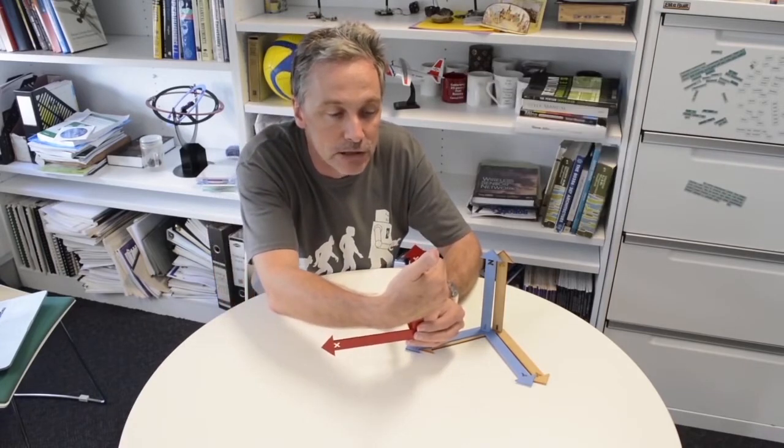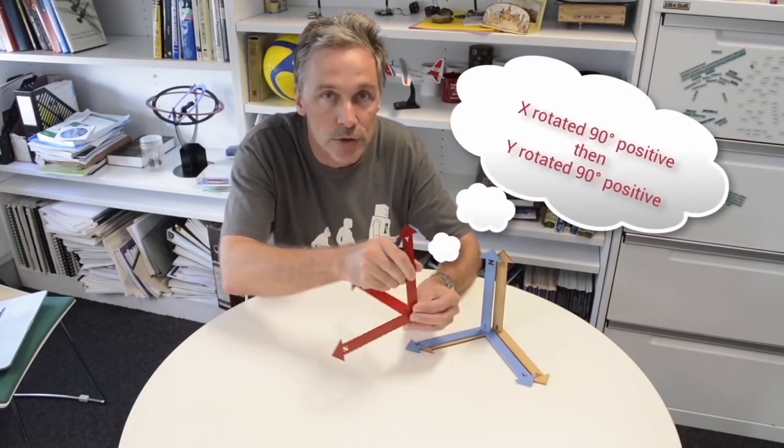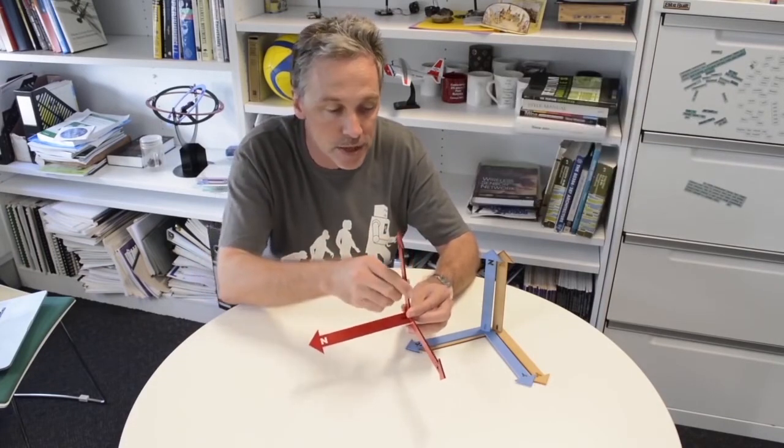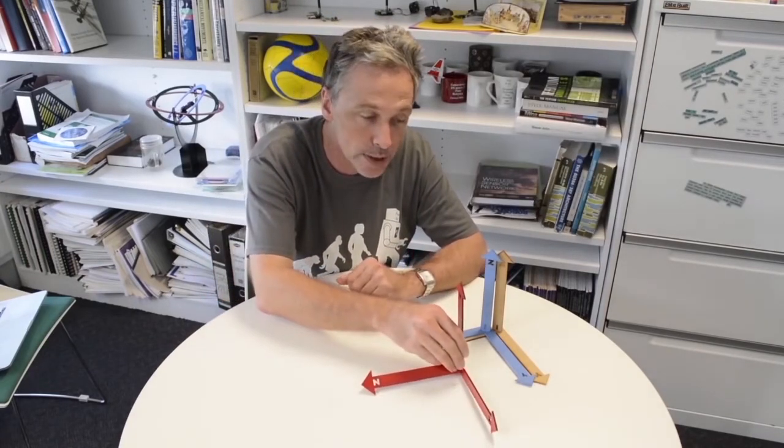And now, I'm going to rotate it by positive 90 degrees around the y-axis. Now, the frame is going to end up looking like this. This is its final orientation. I'm just going to put it down there.